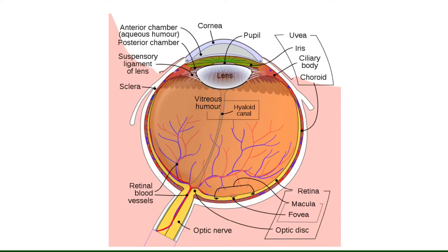Here's a diagram of the eye that I've been showing you — taken from Wikipedia. You can see a few very important structures. The most important one relevant to glaucoma is the ciliary body, then we have the posterior chamber, the anterior chamber, the iris, the lens, the vitreous humor.